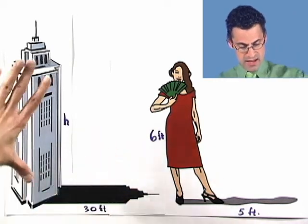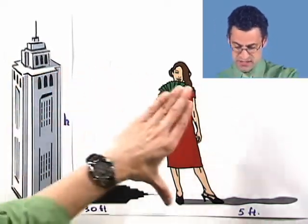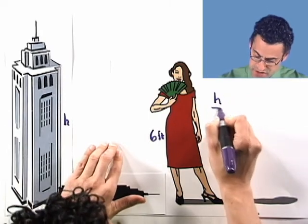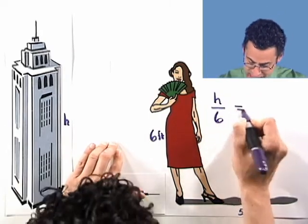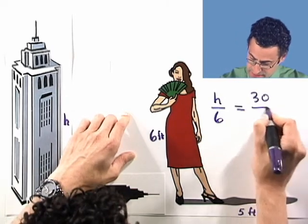And so I know that this is to this corresponding thing, so H is to 6. See how I'm setting up the ratio? H is to 6 as this shadow is to that shadow length. So 30 is to 5.